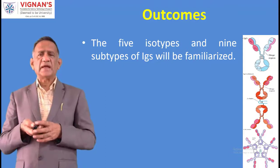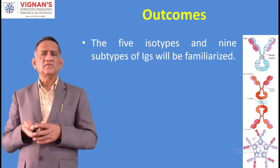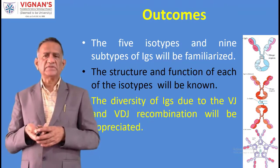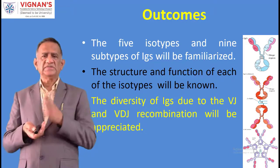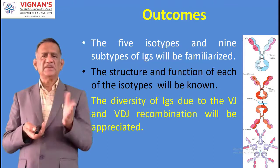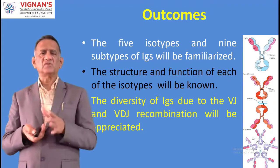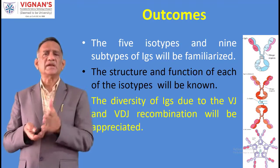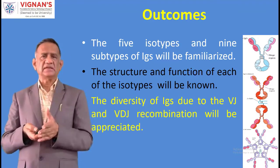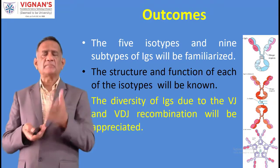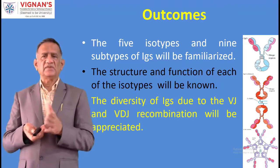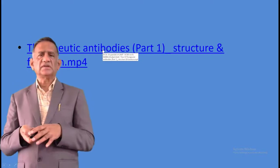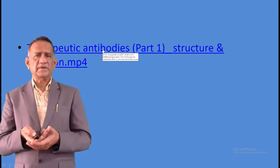The outcomes of this topic: the five isotypes and nine subtypes of immunoglobulins will be familiarized. The structure and function of each isotype will be known. The diversity of immunoglobulins due to VJ (variable and joining) and VDJ (variable, diversity, and joining) recombination will be appreciated - this work was done by Nobel laureate Susumu Tonigawa, a Japanese scientist who worked in the USA.